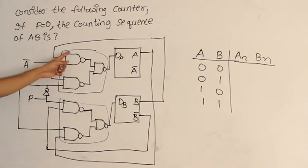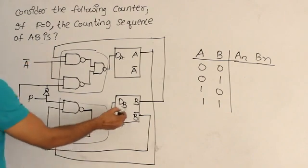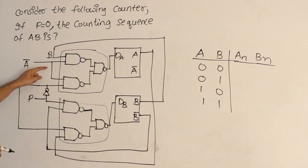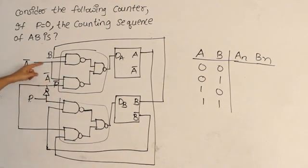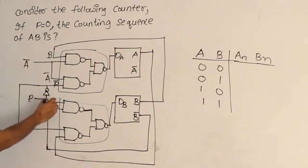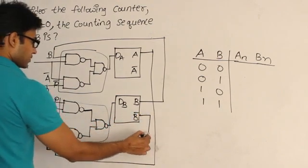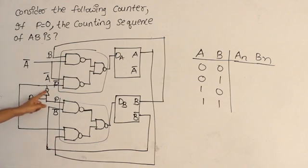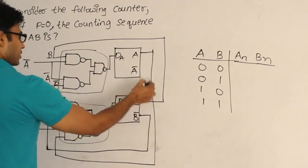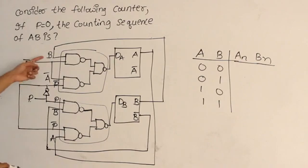The product terms depend on the inputs. One input is A prime, and another is taken from B, so that is B. Another is A prime again, and then P is taken and complemented through a NOT gate, giving P complement. So one term is A complement · P complement and another is A complement · B. Then there is P, and B complement, and also P complement and A — it is quite complex, but once you write down the inputs it becomes simple.